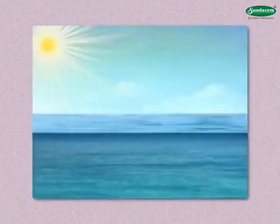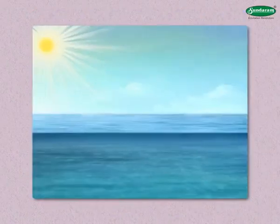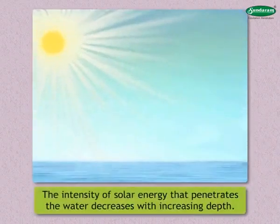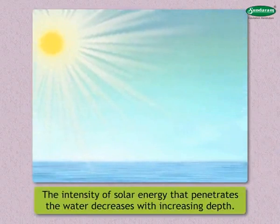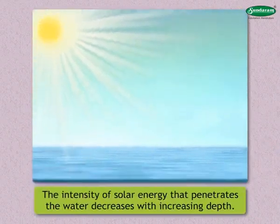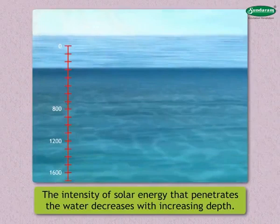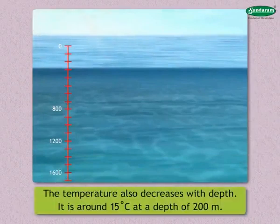Now let us see the vertical distribution. Ocean water temperature varies from the surface to the floor of the ocean. The intensity of solar energy that penetrates the water decreases with increasing depth. As a result, the temperature also decreases with depth.